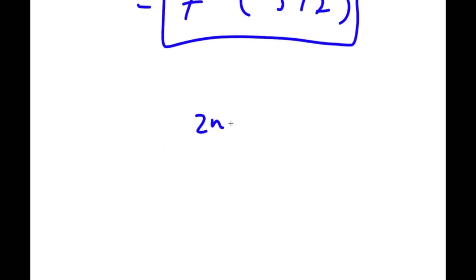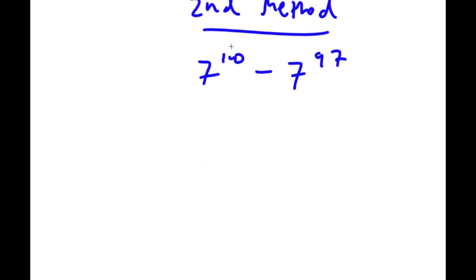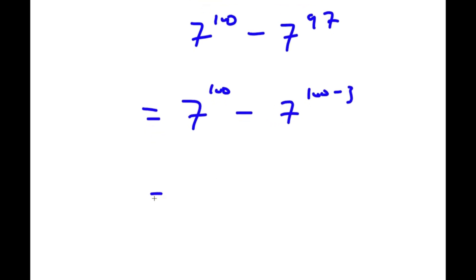Now I have a second method of solving this problem. I have 7 to the power of 100 minus 7 to the power of 97. This time, instead of changing 100 to 97 plus 3, I'm going to change 97 to 100 minus 3. So I have 7 to the power of 100 minus 7 to the power of 100 minus 3, which I rewrite as 7 to the power of 100 plus negative 3.